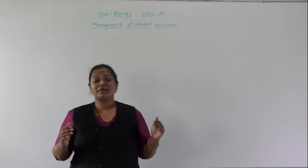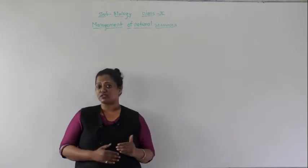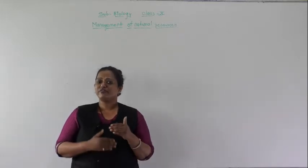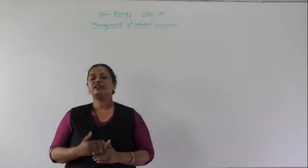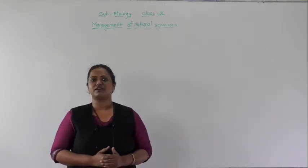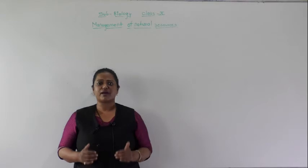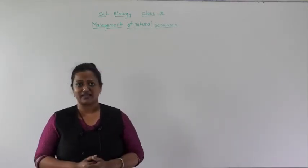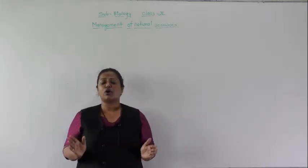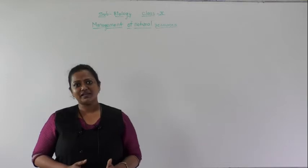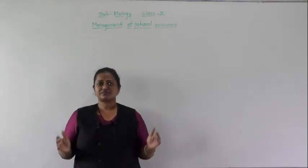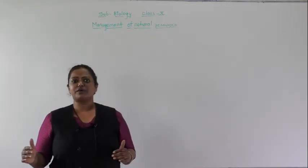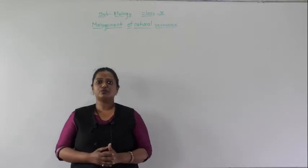That Sanskrit phrase is "Vasudhaiva Kutumbakam," which you have heard many times. The meaning of this phrase in Hindi, Marathi, or English is that the entire earth is our family. Both living and non-living factors are an integral part of this family. Just as we live in harmony within our own family, all non-living and living components of the earth live in harmony.